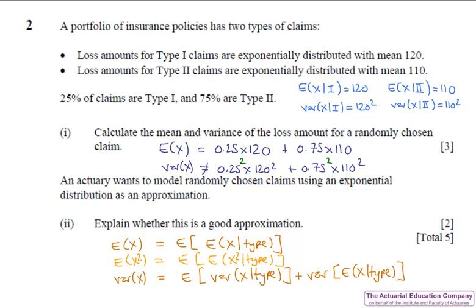Part 2 we have to explain whether this is a good approximation and again students should remember that part 2 follows on after part 1. We've been calculating the new mean and variance. What we could do is compare that to the mean and variance of an exponential. The most obvious thing about those is that the variance is the square of the mean.